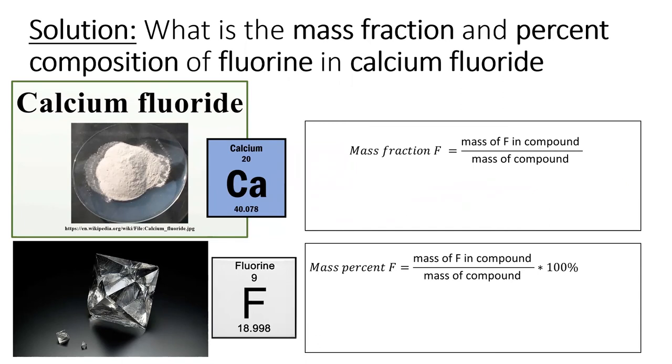And here's the solution. First, we need to know the formula for the ionic compound calcium fluoride, which we can get from looking at which groups these elements are in on the periodic table. The formula is CaF2.